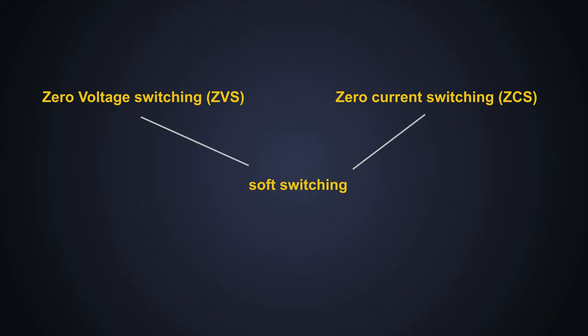This technique of zero voltage switching or zero current switching is called the soft switching of a switching element. This soft switching is achieved by multiple techniques like adding snubber circuits which are categorized as passive snubbers and active snubbers.